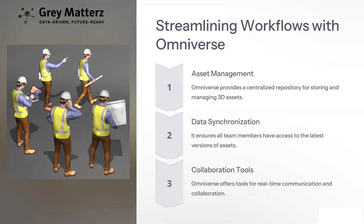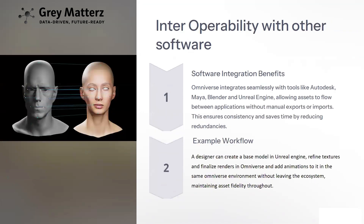So how does Omniverse streamline workflows? It provides centralized asset management — you can use a centralized repository for storing and managing different kinds of assets, downloading from samples or using your own. It helps with data synchronization so all team members can work on the same asset or viewport at the same time, making real-time communication easy. It also provides interoperability with various software like Maya, Blender, and Unreal — you can work on these simultaneously and interchange assets between them.